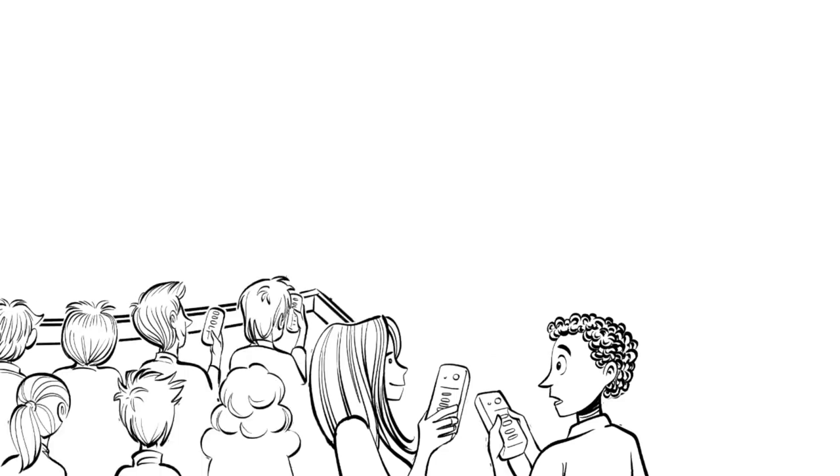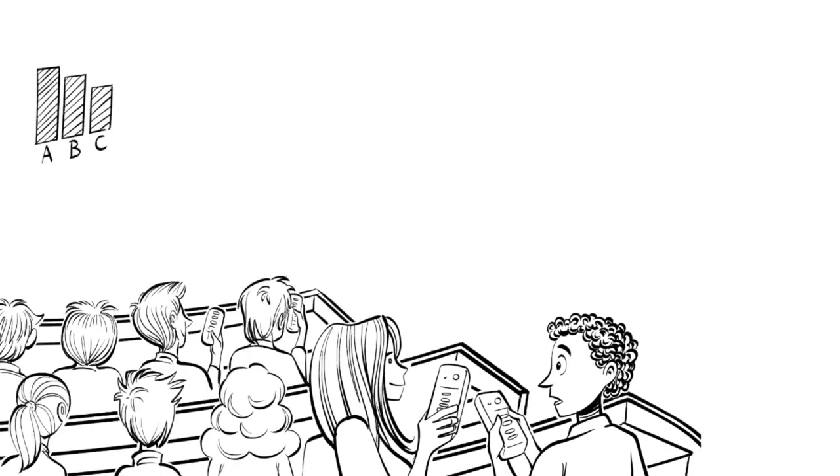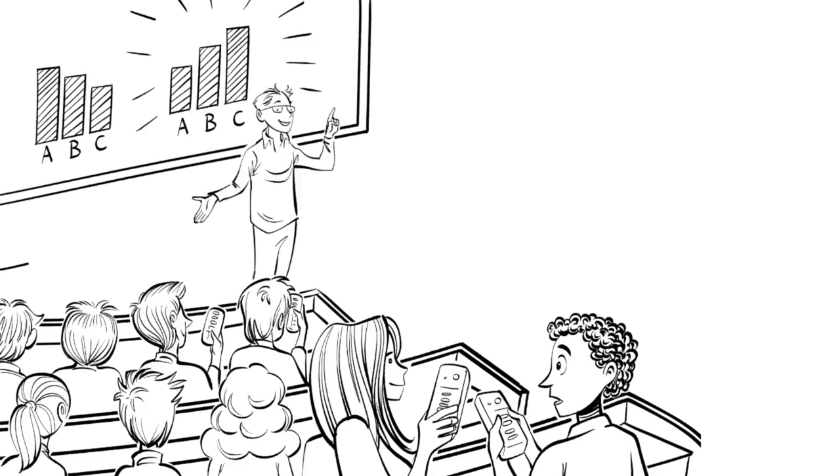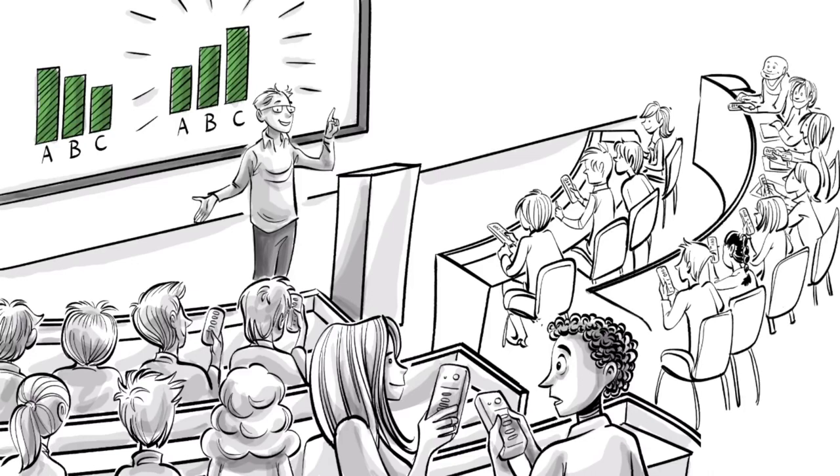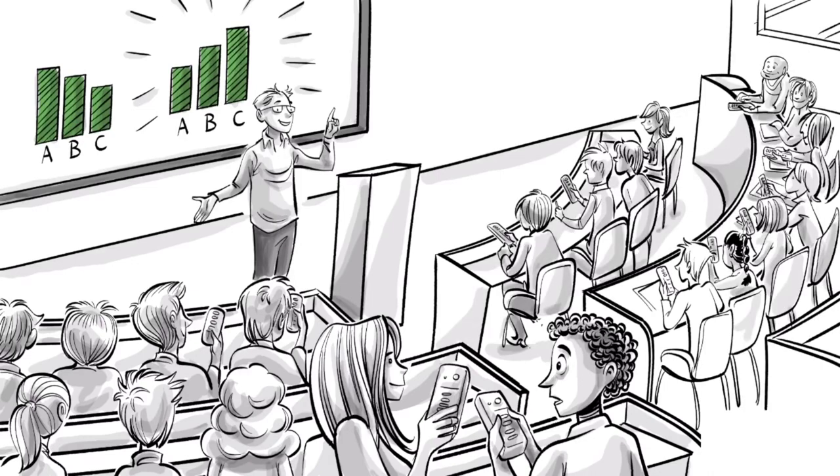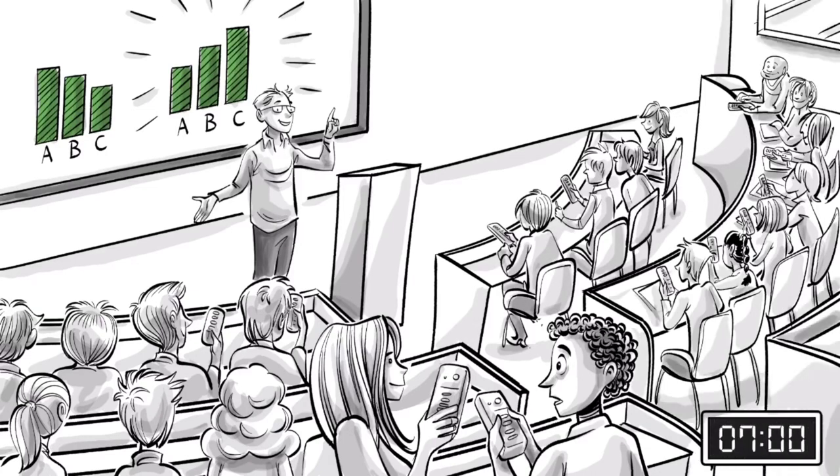Then there will be a second clicker vote and only now the results will be shown. Typically, the second vote will be much better than the first as students learn a great deal from their discussions. An ideal question will have about a third correct on the first vote and 85% correct on the second. All this takes around seven minutes.